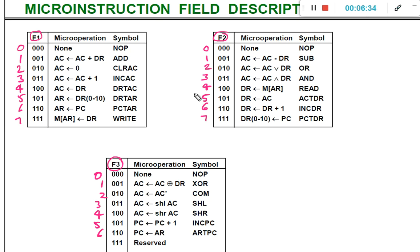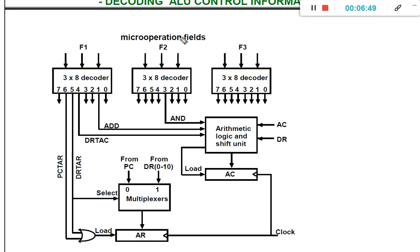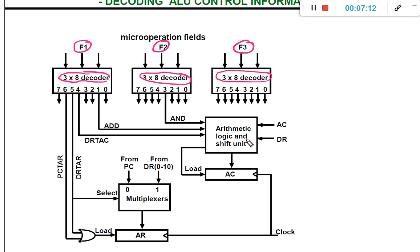Previously we represented operations in binary format. Now using decoders we decode a specific operation and send it to the arithmetic logic unit. To decode the values of F1, F2, and F3 we need three 3-by-8 decoders so that we can decode each field and accordingly send a specific operation to the arithmetic logic and shift unit.